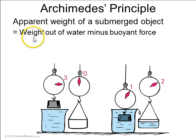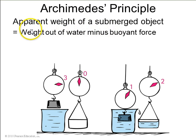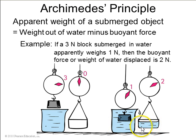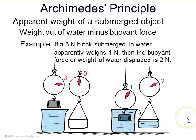A consequence of Archimedes' principle is that the apparent weight of a submerged object is less — it's equal to its weight out of the water minus the buoyancy force. For example, a three newton block gets submerged in some water and pushes out two newtons worth of water, so the apparent weight of that block is three minus two, which equals one newton. That's why you feel lighter when you get into the swimming pool.